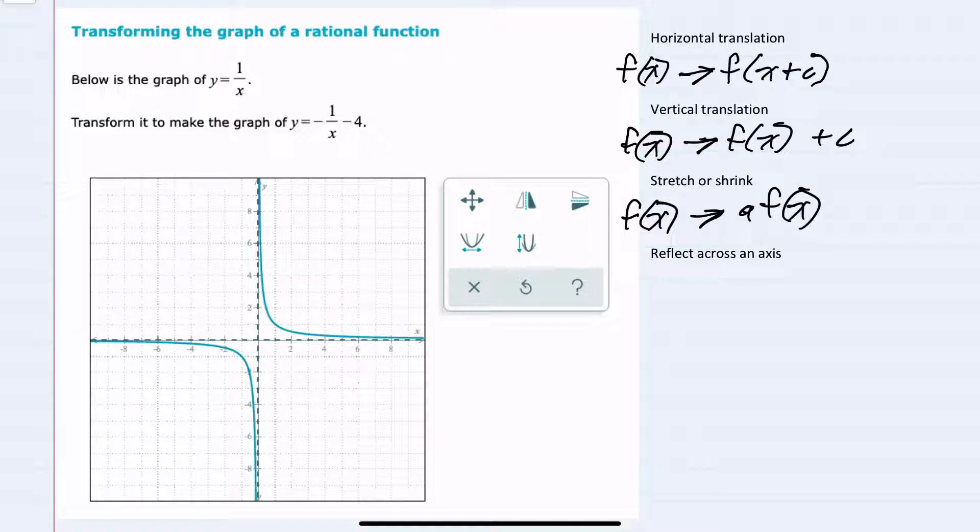We could have a stretching or a shrinking, where we're multiplying a function by some value. If that value were greater than 1, it would stretch. If it were between 0 and 1, it would shrink. And then if we were to either take the opposite of the function or plug in the opposite of x, that would give us a reflection either across the x or y axis.